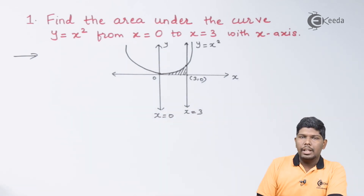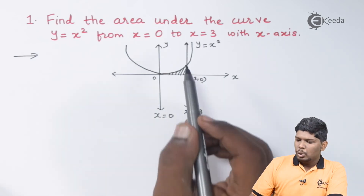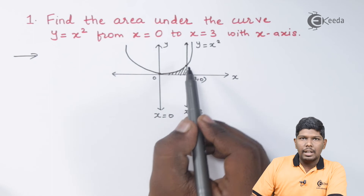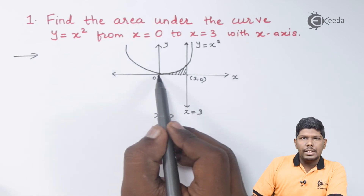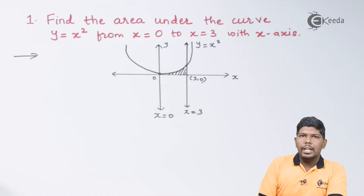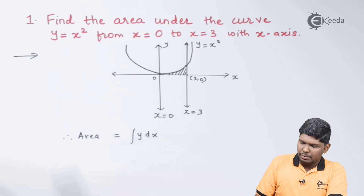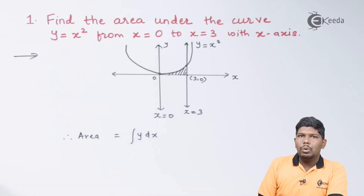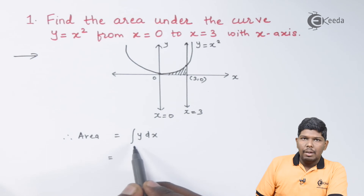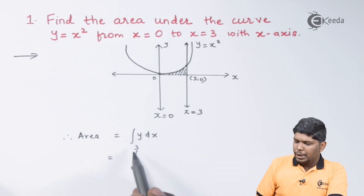To find this area we use the formula: Area = integral y dx. We must determine the limits of x — where x starts and where it ends. As seen in the region, x starts at 0 and ends at 3. Therefore the limits of x are from 0 to 3, and area = integral from 0 to 3 of y dx.